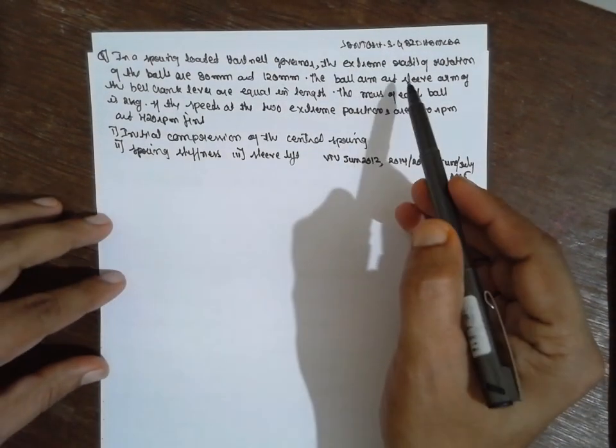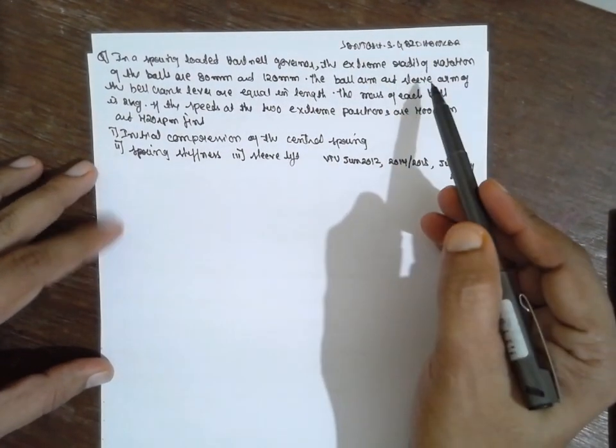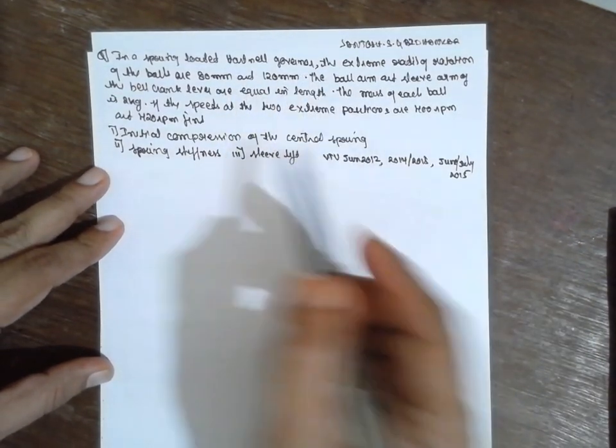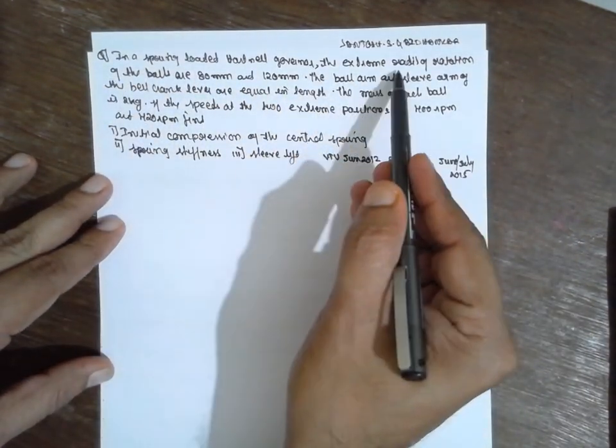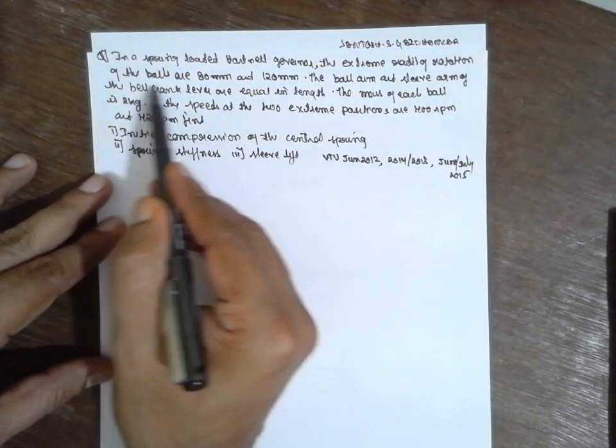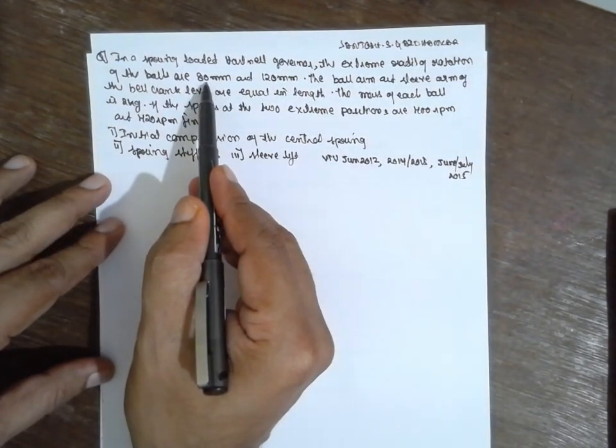I am Satyash Gaydankar. Today I am teaching the Dynamics of Machine. In the Dynamics of Machine I am focusing toward the Aatna governor. In a spring-loaded Aatna governor, the extreme radial rotation of the ball is 80 mm and 120 mm.